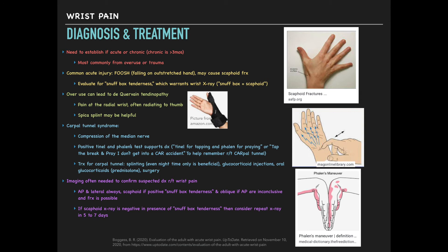For treating carpal tunnel, we splint these patients. Research shows that even splinting just at nighttime can be very beneficial. Other options include glucocorticoid injections and oral glucocorticoids like prednisolone, with surgery as a last resort. A lot of times imaging is needed to confirm diagnosis — we'll always get an AP and lateral view, and a scaphoid view if there's snuff box tenderness. An oblique view is obtained if the AP is inconclusive or a fracture is suspected. If the scaphoid x-ray is negative but the patient has snuff box tenderness, repeat x-ray in five to seven days is recommended.